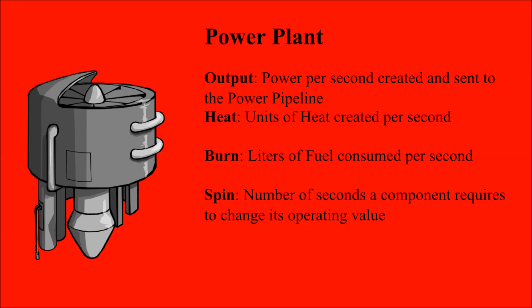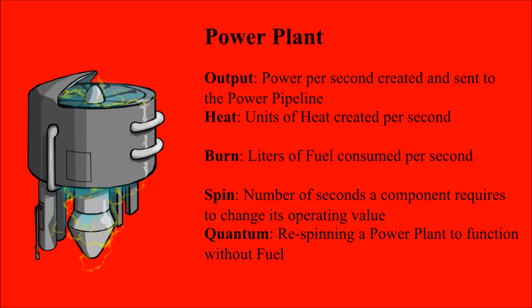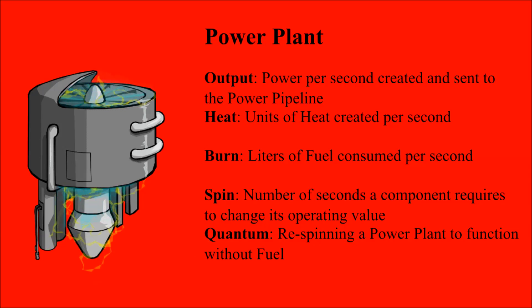The power plant's last attribute is quantum. Quantum requires the power plant to have been operating at 100%. It then turns its output on itself and spins itself up a second time, driving it to a perpetual state. While spinning up quantum, the power plant cannot output to the power pipeline. In quantum, power plants create more output and heat, but no longer burn to operate. Leaving quantum mode requires the power plant to be shut down, spinning down twice, and restarted. I'll explain why I added this attribute later. Even at first I rolled my eyes, but it grew on me.